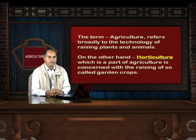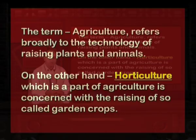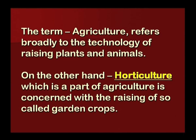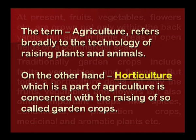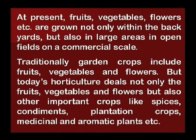The term agriculture refers broadly to the technology of raising plants and animals. On the other hand, horticulture, which is a part of agriculture, is concerned with the raising of so-called garden crops. At present, fruits, vegetables, flowers, etc. are grown not only within the backyards but also in large areas in open fields on a commercial scale.